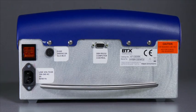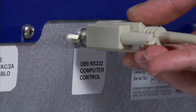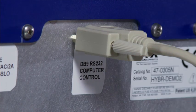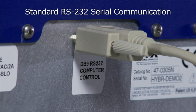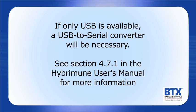Next, connect the serial cable between the D-subminiature 9-position DB9 connector labeled Computer Control on the back of the unit, and a serial port on the computer. This is the communication link between the microprocessor within the waveform generator and the computer. It is a standard RS-232 serial communication. If only USB ports are available on the computer, then a USB-to-serial converter will be necessary. See Section 4.7.1 in the HYBRAMUN user's manual for more information.